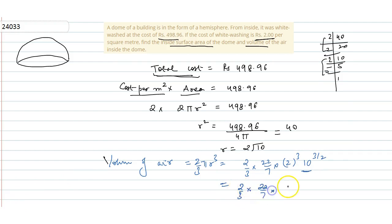So it will be 8 into 31.6. When we solve this entire thing, the answer is 529.6 meter cube. So this is the answer to this question.